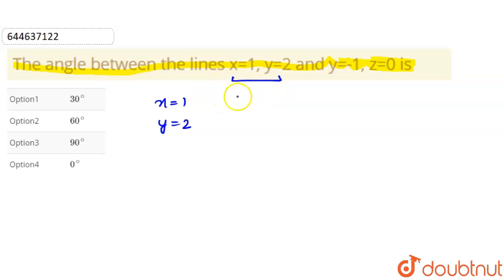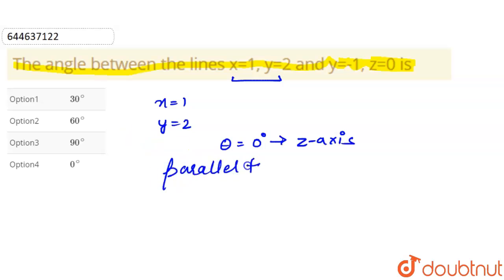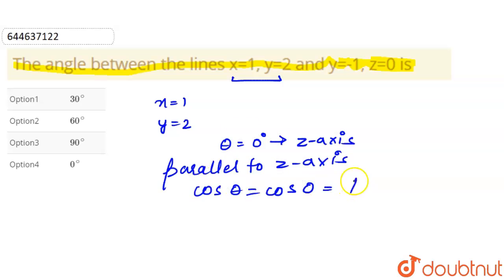For the first line, x=1 and y=2, that means the line lies on the x and y coordinates only — it is not lying in the z-axis. So we can say it will make an angle of 0 degrees with the z-axis, meaning this line will be parallel to the z-axis.